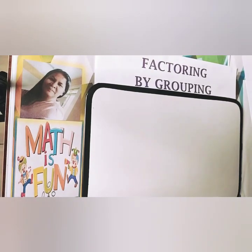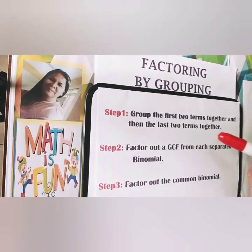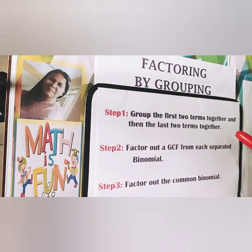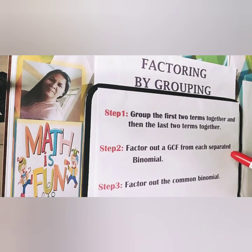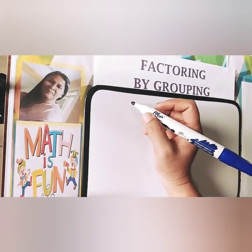Hello, this time we are going to study factoring by grouping in an easy way. First, we need to know the steps so that we can find the factors easily. Step number one, we need to group the first two terms together and then the last two terms together. Step number two, factor out a GCF from each separated binomial. And the last step is to factor out the common binomial.